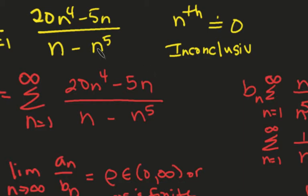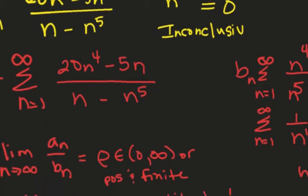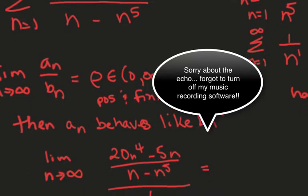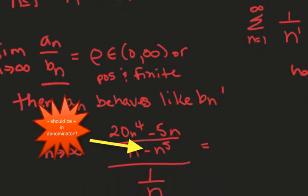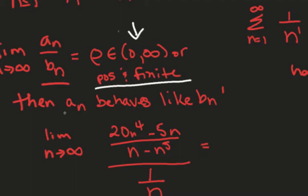Now we're back online. We tried the nth term first. It didn't work. Then we did comparison, was suggested. And I advise that we do limit comparison because it's the easier of the two when you do the limit of a sub n over b sub n. And if that answer is an element of 0 to infinity or is positive and finite, then a sub n behaves just like b sub n. So, we're in the process of taking that limit.